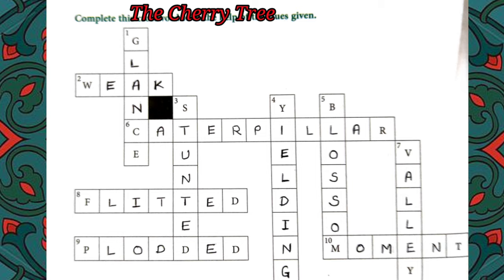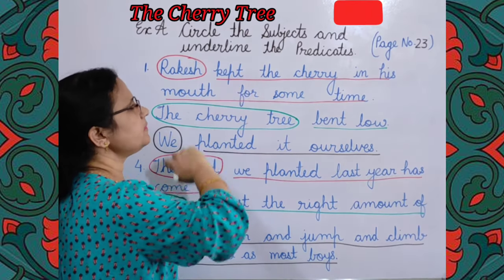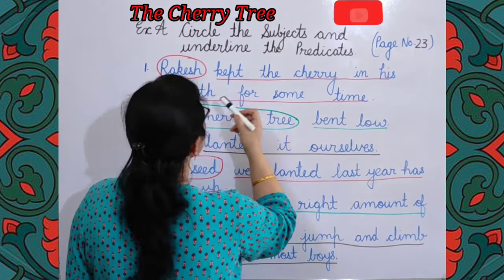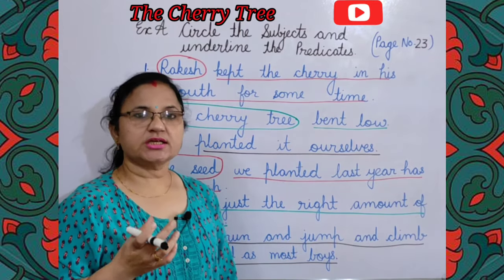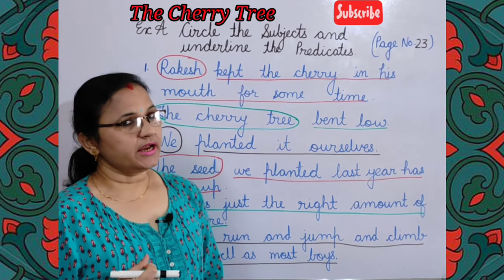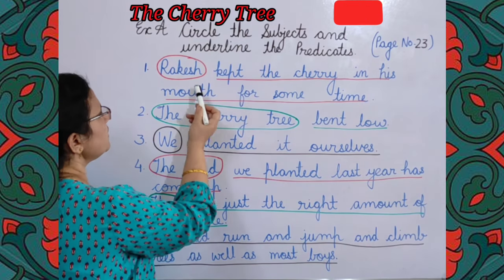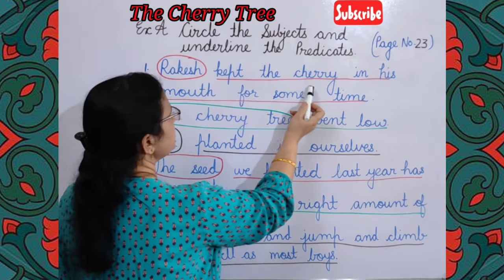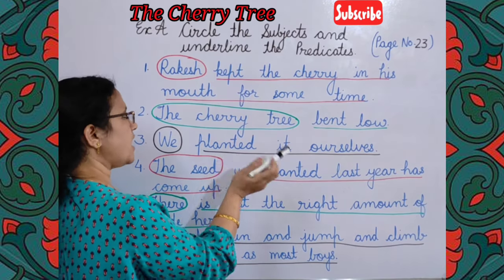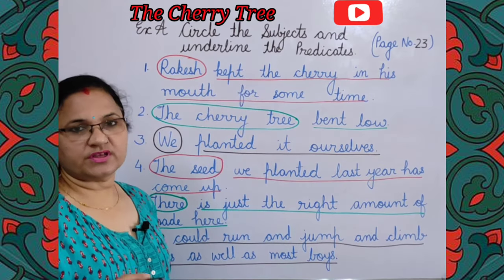The next exercise on page number 23: circle the subjects and underline the predicates in the following sentences. Subject is the doer of the action — jiske baare mein sentence mein baat ki gayi hai. Predicate is the rest part of the sentence that gives information about the subject. First sentence: 'Rakesh kept the cherry in his mouth for some time.' Subject is Rakesh; rest is predicate.